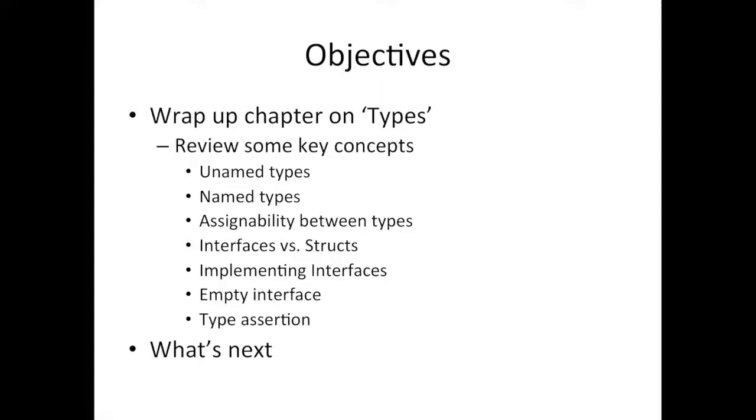We did named types. That's when you start off with the type keyword - that's a named type because you start with the type keyword, give it a name, and then whatever the complex type literal comes afterward. Assignability between types: two named types are totally different, so you cannot assign them even if they're the same underlying type.